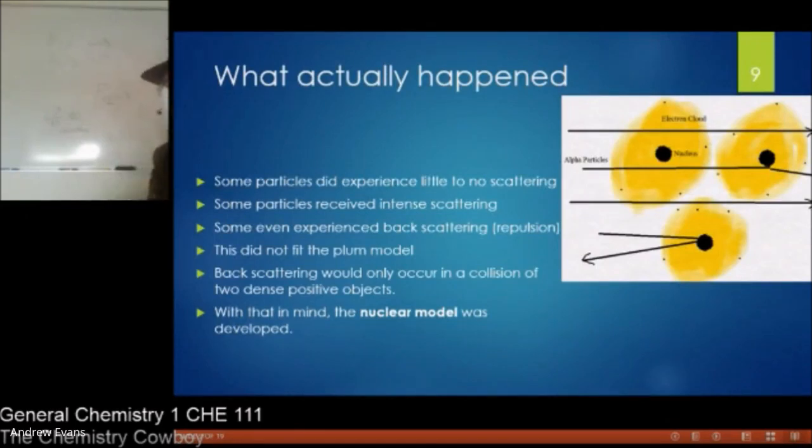So what actually happened? So thank God the fluorescent plates were arranged in a semi-circular pattern all around the gold foil. Because when he looked at this, he found yes, some particles did puncture through. Some did experience minor deflection. But then some had intense backwards scattering, where they were repulsed when you shot through.